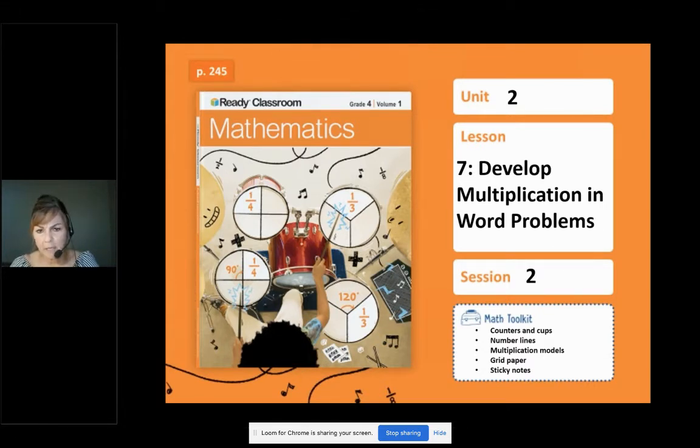Yesterday, we explored the idea of a multiplicative comparison that a multiplication equation can show a comparison between numbers. It was like if you had a group of five stars and then you drew three times as many, and that was 15 stars. Well, today you're going to work on writing an equation to represent a multiplicative comparison word problem. Doesn't that sound fancy? I'll be with you every step of the way so you can develop a strategy for solving multiplicative comparison word problems.